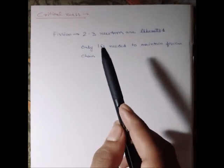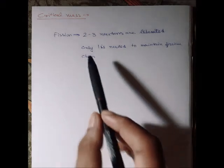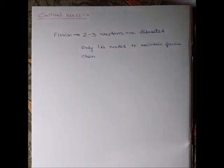So it might seem like once the fission reaction is initiated in a given mass of fissile material, it would readily sustain itself because two to three neutrons are liberated and we only need one of them, but that's not the case.